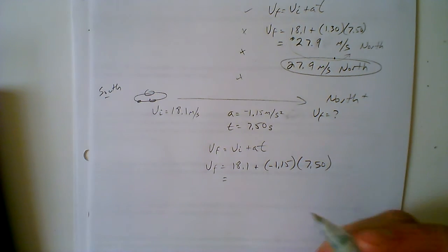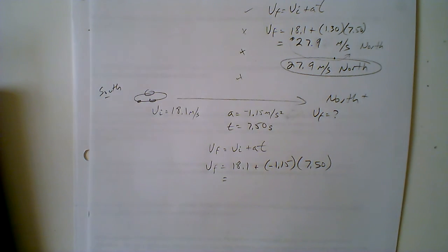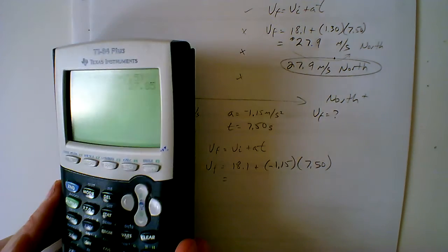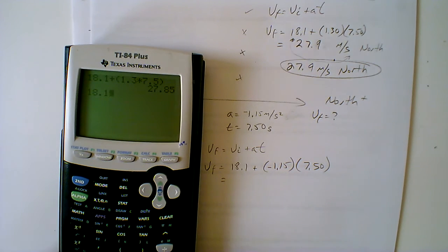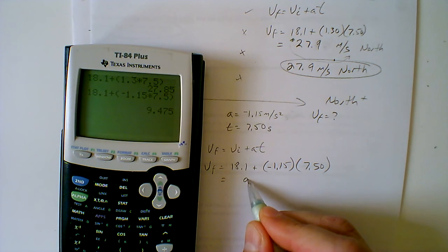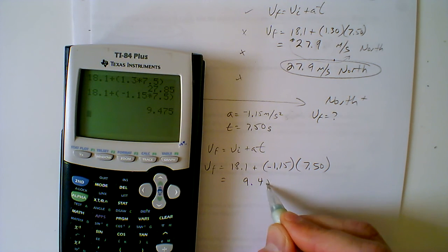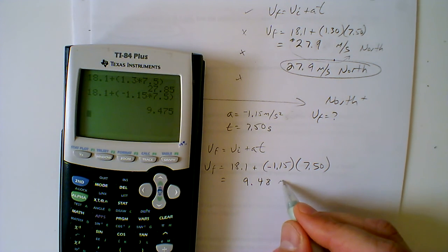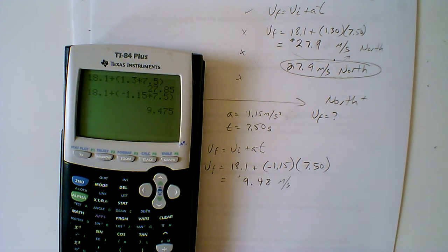So we want to find out final answer. 18.1, so we start off with 18.1 plus open parentheses negative 1.15 times 7.5, close parentheses equals, and our final answer here is 9.48 meters per second. This is still positive, it's a positive number in the calculator.